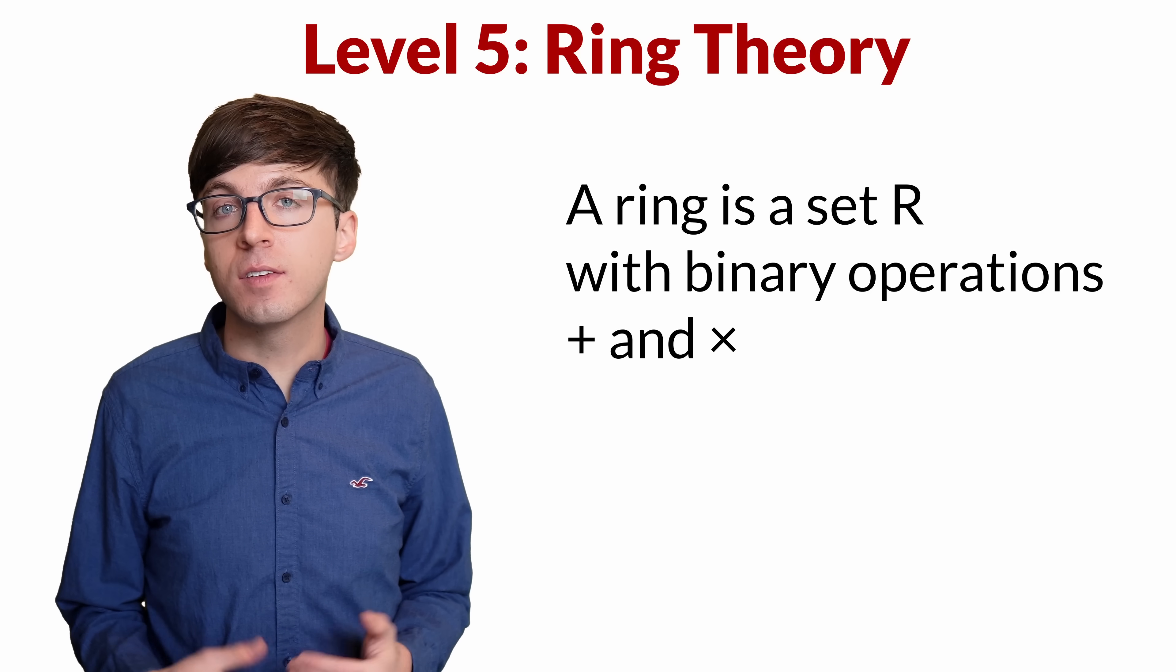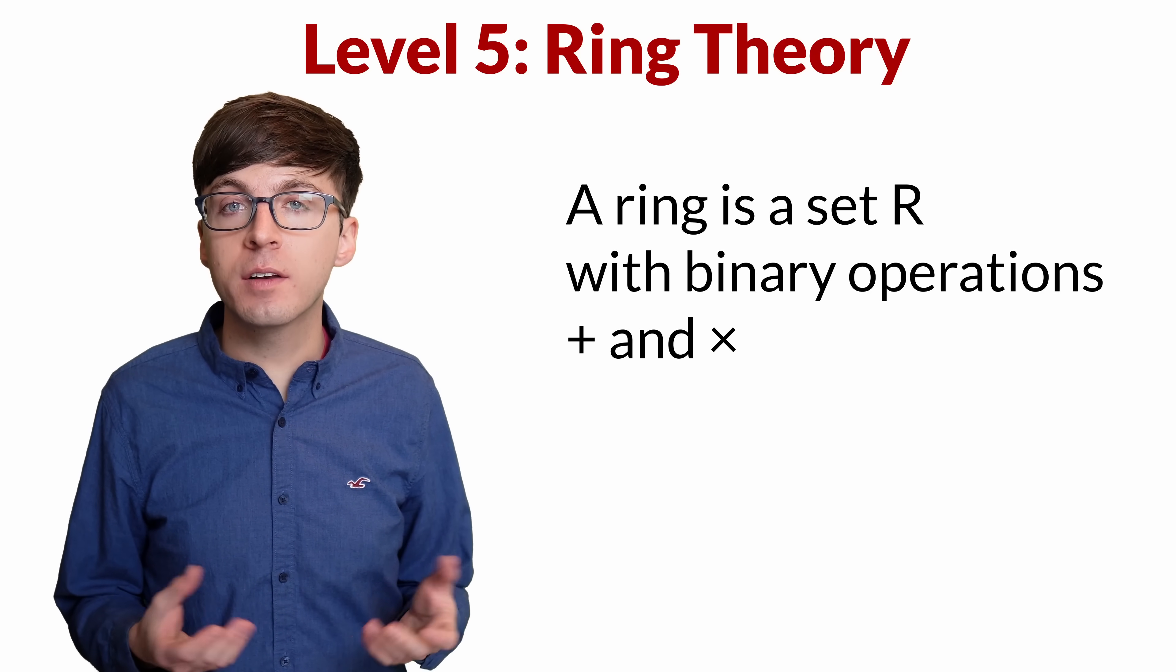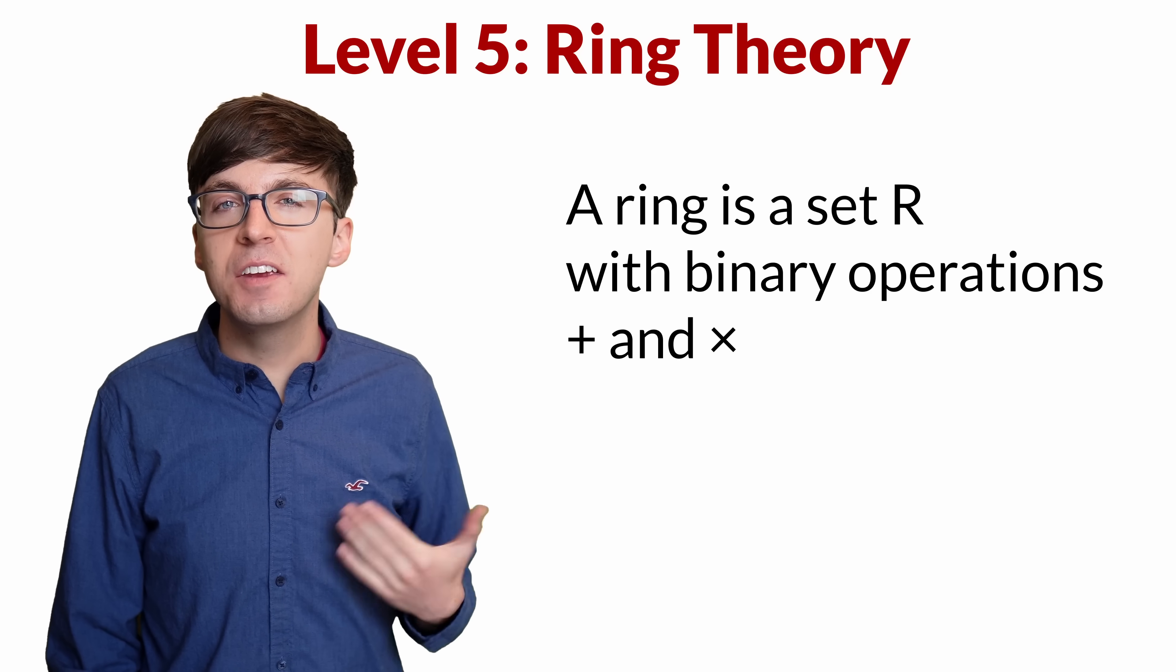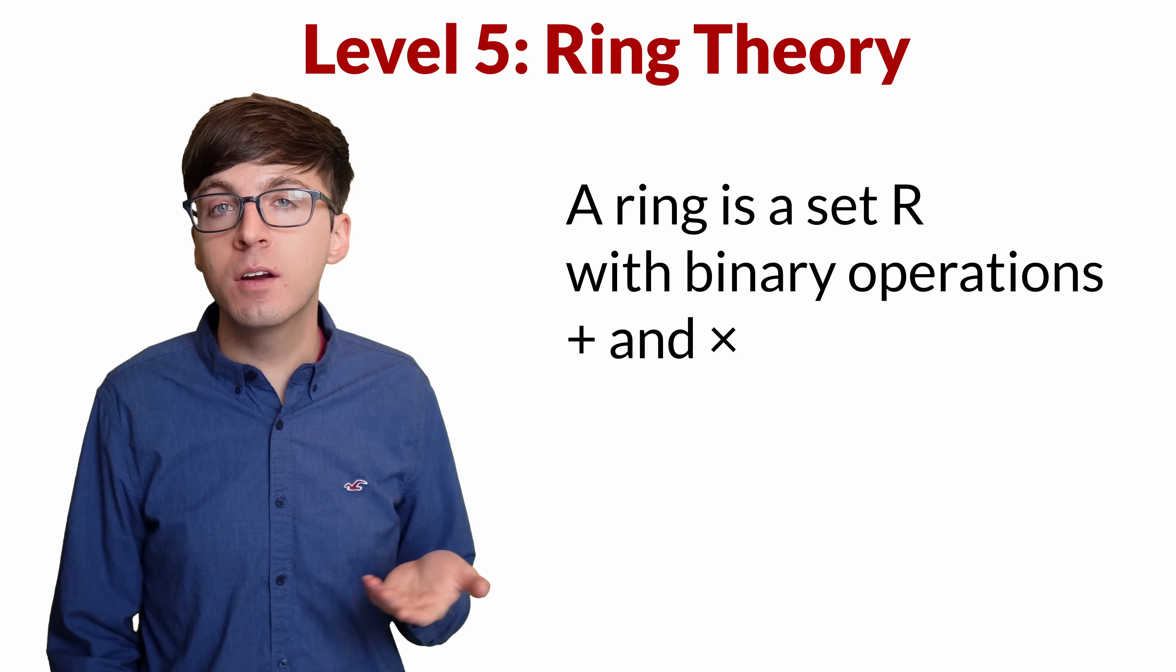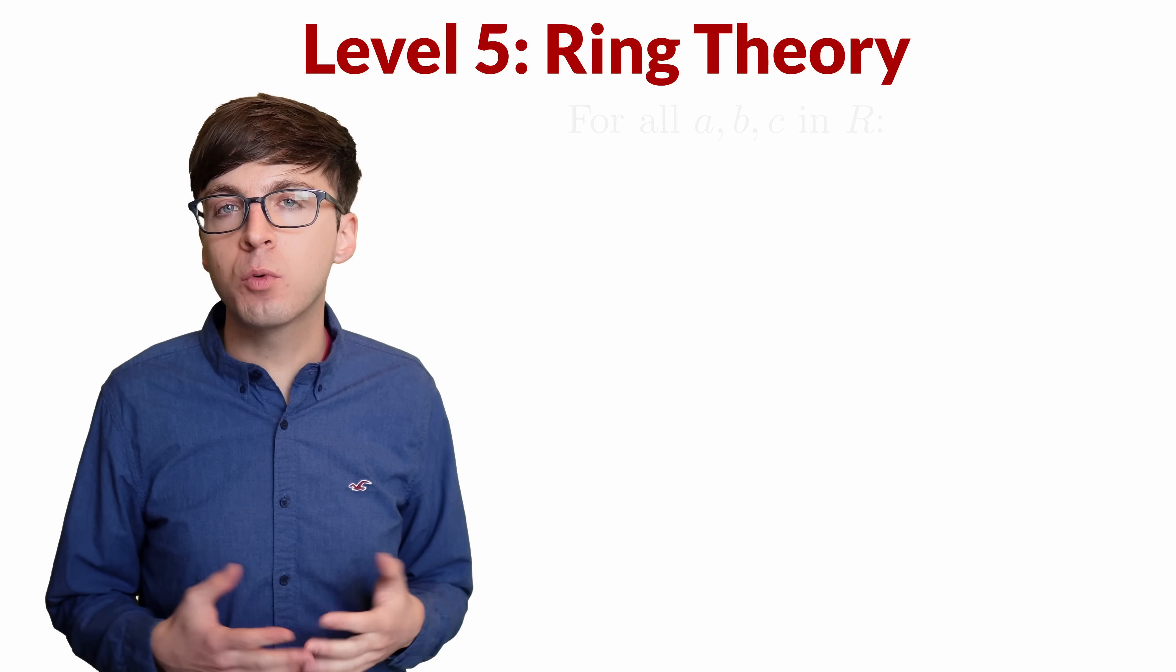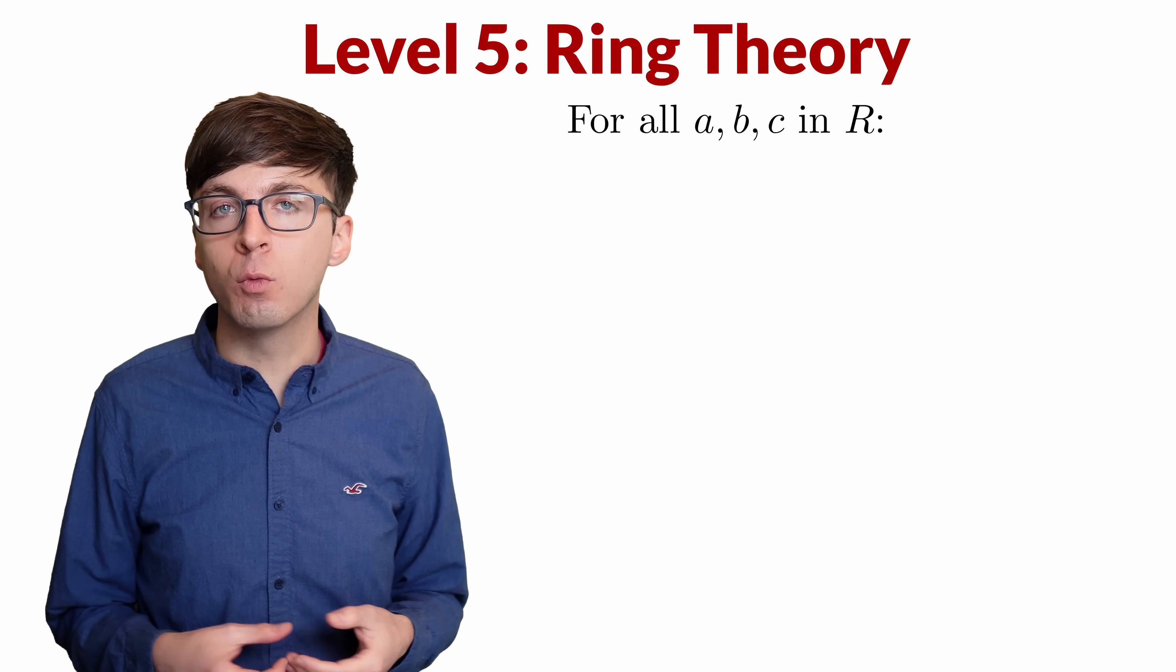A ring is a set with two binary operations that we call addition and multiplication that satisfy certain properties. One example of a ring is the set of integers, so as we go through these properties, if you want, you can imagine that all the values are integers. In order for the set R to be a ring with operations addition and multiplication, we want these properties to be true for all elements a, b, and c in the ring R.